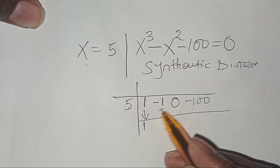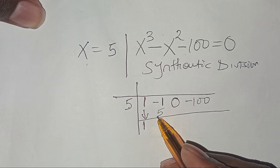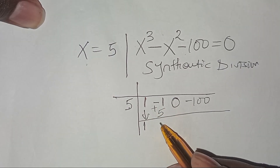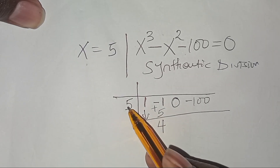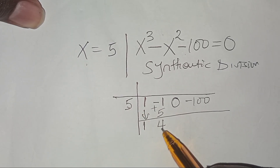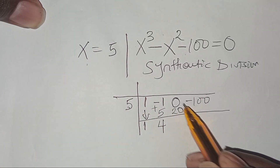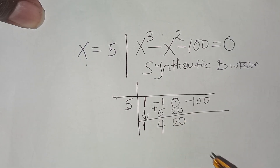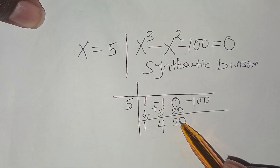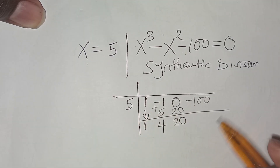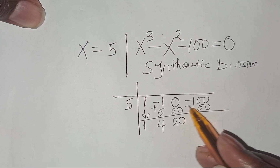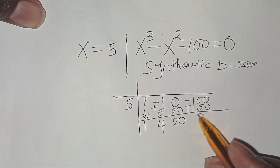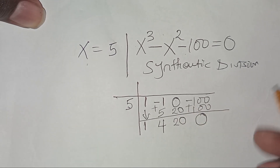5 times 1 is 5. Adding: negative 1 plus 5 equals 4. Then 5 times 4 equals 20. Then 0 plus 20 equals 20. And then 20 times 5 equals 100. Finally, negative 100 plus 100 equals 0, confirming x equals 5 is a root.